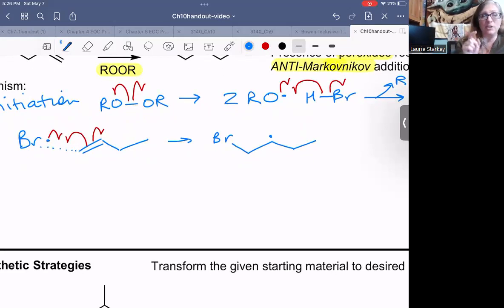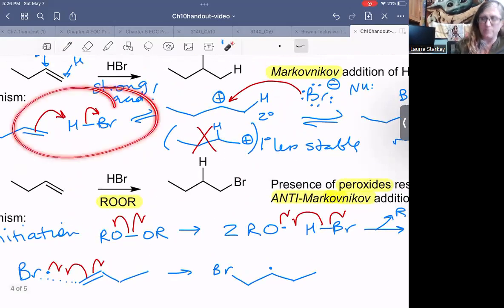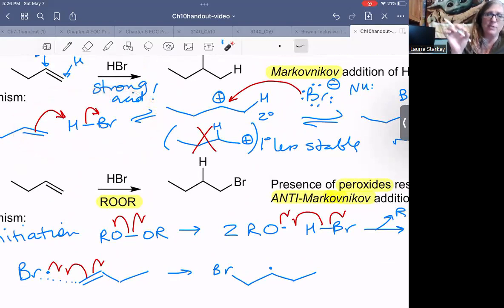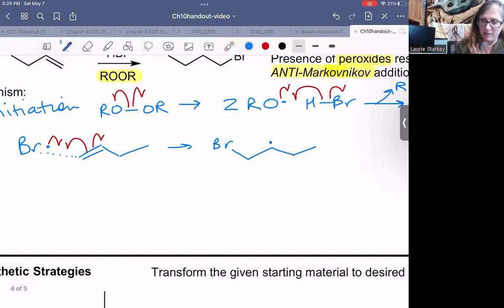Now this is the step that decides our regiochemistry. It's the bromine atom that's adding first. Remember up here, we protonated first. So it was the proton that added first, the hydrogen. But now the bromine is adding first. So let's consider both paths. If the bromine were to add to the second carbon instead of the first carbon, it would form this radical. And so these are our two competing intermediates. So as always, we look at our competing intermediates and we decide who's more stable.